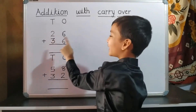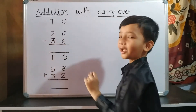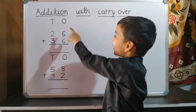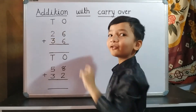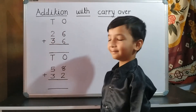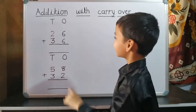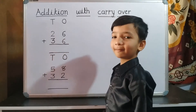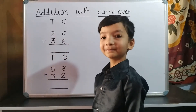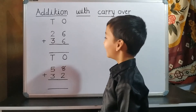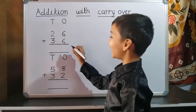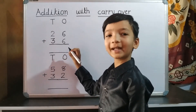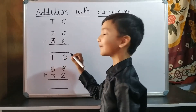26 plus 36. First we do addition of one's place. 6 plus 6 equals 12. So we write 2 on one's place and 1 carryover to ten's place.